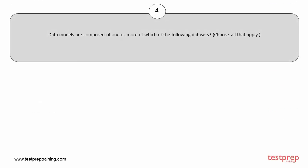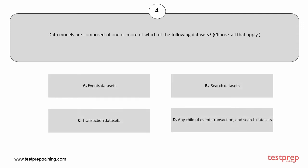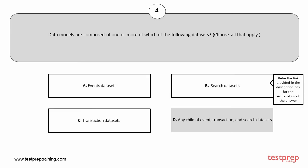Question number 4. Data models are composed of one or more of which of the following data sets? Choose all that apply. Your options are: A. Events data sets. B. Search data sets. C. Transaction data sets. D. Any child of event, transaction, and search data sets. The correct answers are option A, B, and C.